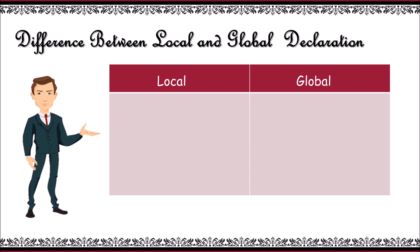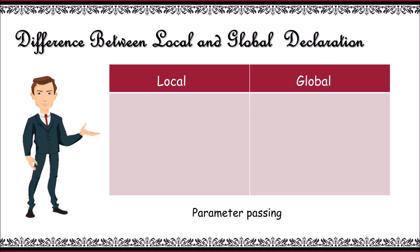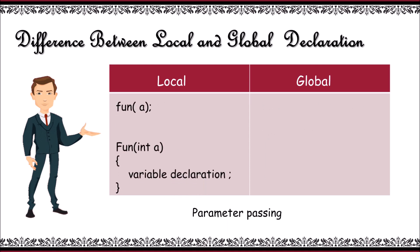On considering parameter passing, parameter passing is required for local variables to access the value in another function, and it is not necessary for a global variable as it is visible throughout the program.